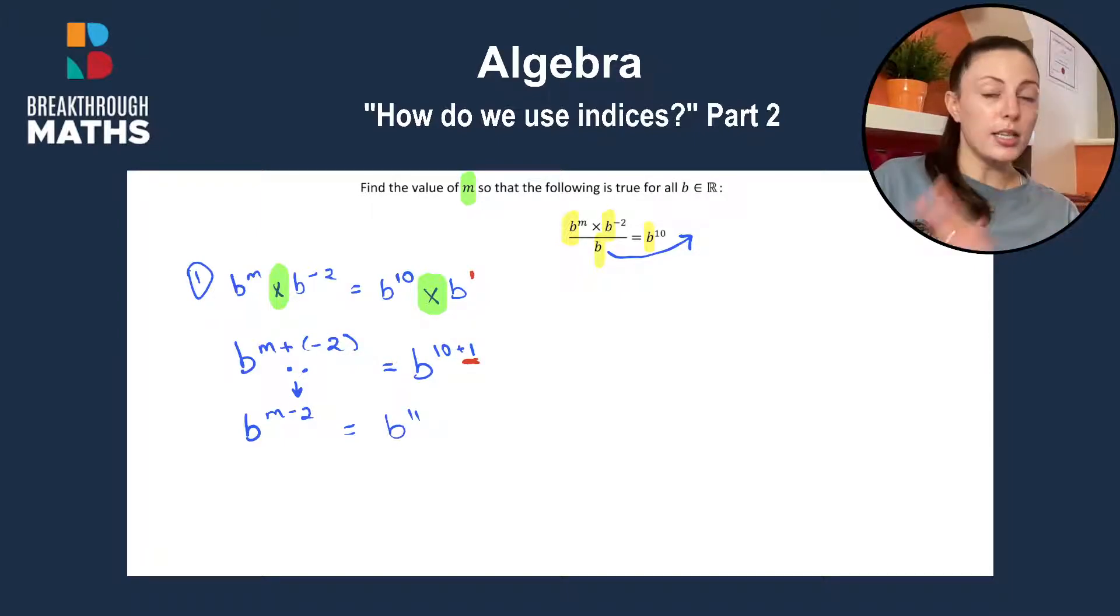And now that we have B to the power of something equals B to the power of something else, we can drop our base. So we'll have M minus 2 is equal to 11. So M is going to be 11 plus 2, which means M is equal to 13.